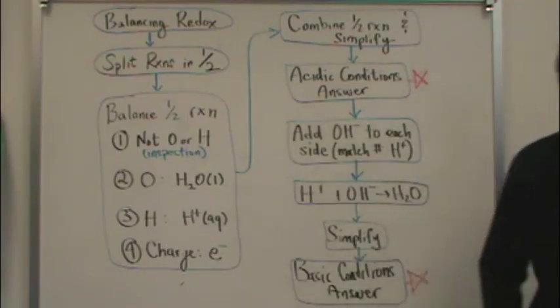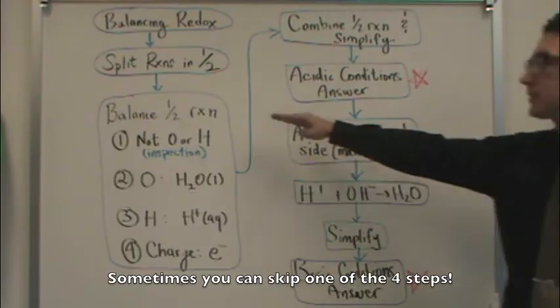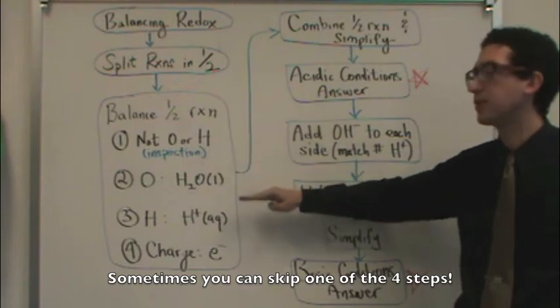You're going to notice in these four steps, sometimes you can skip them. So for example, in some of those half reactions, you won't have oxygen. Don't do that step. Or you might not have hydrogen. Don't do that step. So you're going to be skipping some of these steps sometimes. Just make sure you must go in this order.